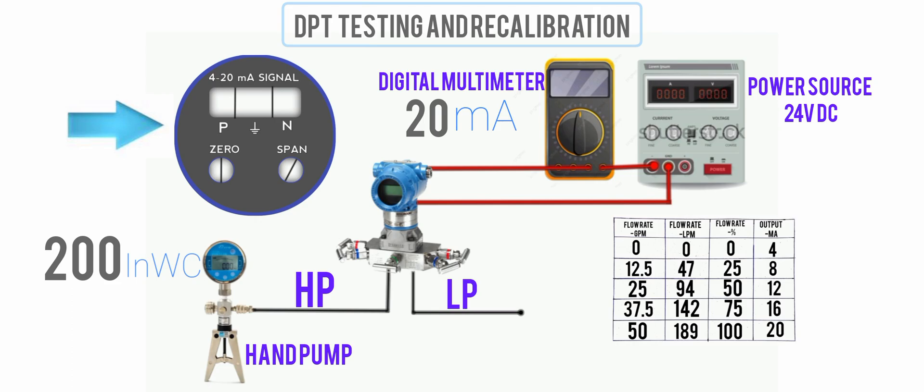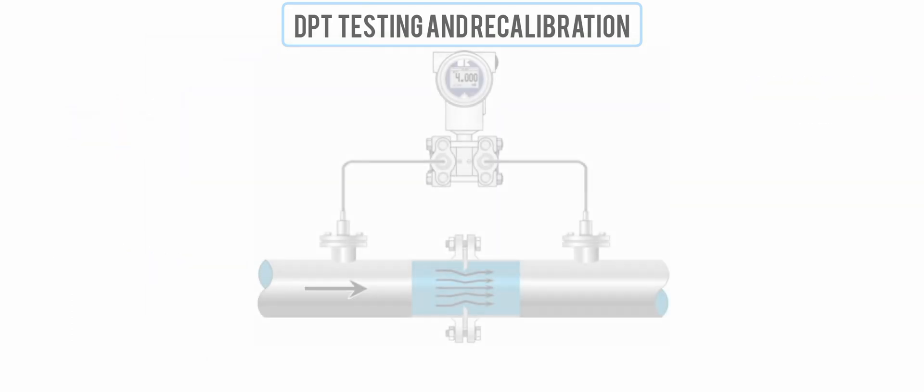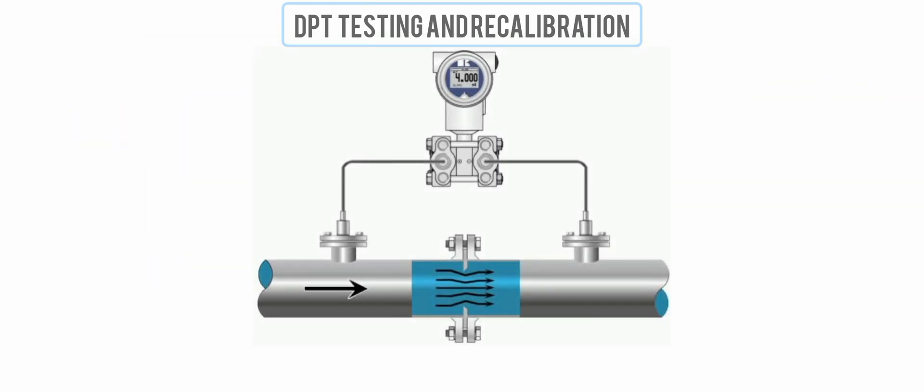Now that you've recalibrated, it's a good idea to apply all of the values from the calibration table and record the corresponding output current values. Let's return the transmitter to service now that it's been calibrated.